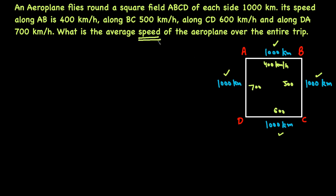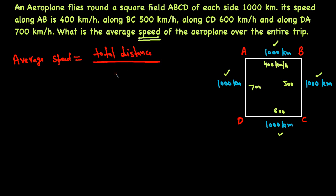We need to find the average speed of the aeroplane. Average speed equals total distance over total time. The total distance is 1000 plus 1000 plus 1000 plus 1000, which equals 4000 kilometers.